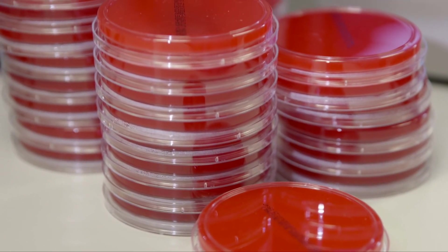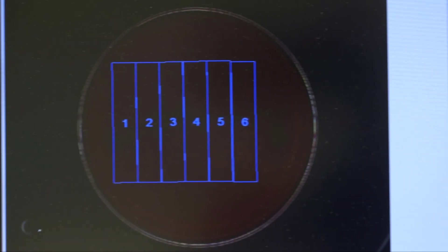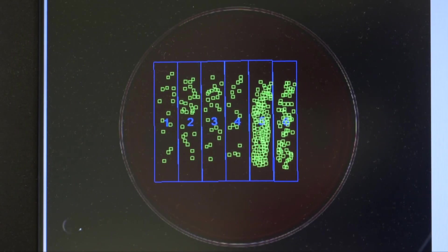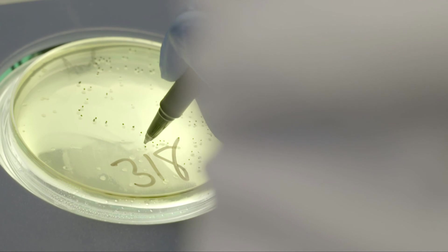They reported that the biggest benefit of using the Protocol 3 is the amount of time they save and how quickly they can get their results out there. Manual colony counting and recording results is time consuming and can be error prone when done on a large scale.